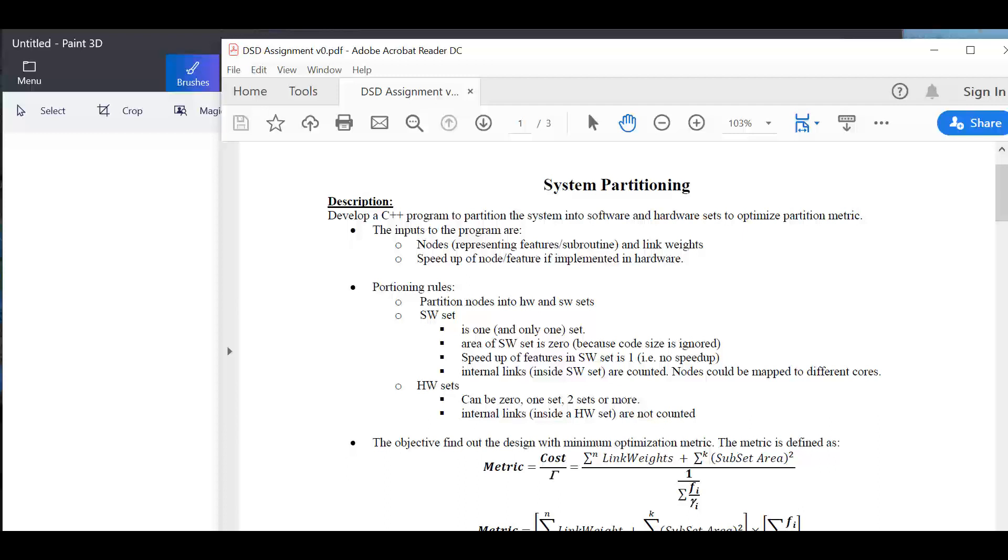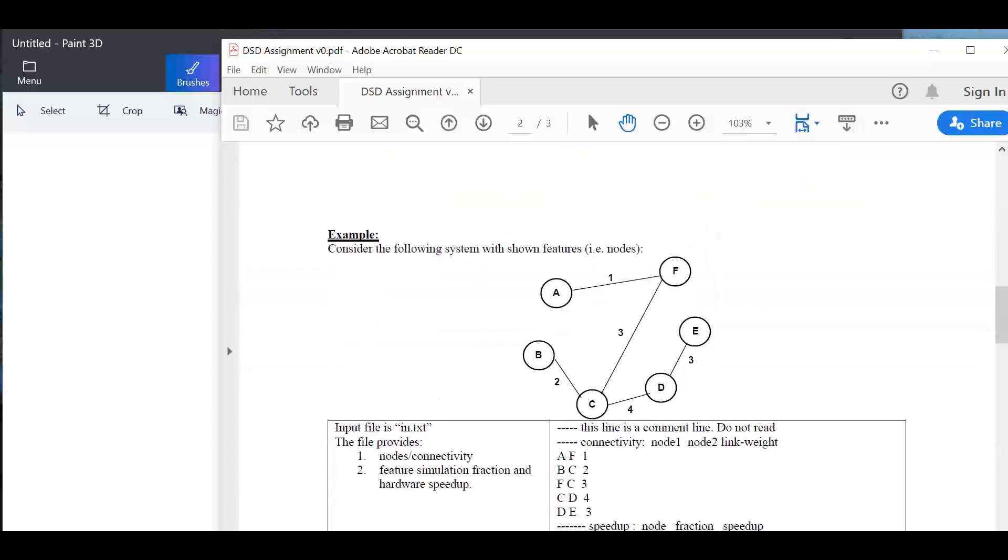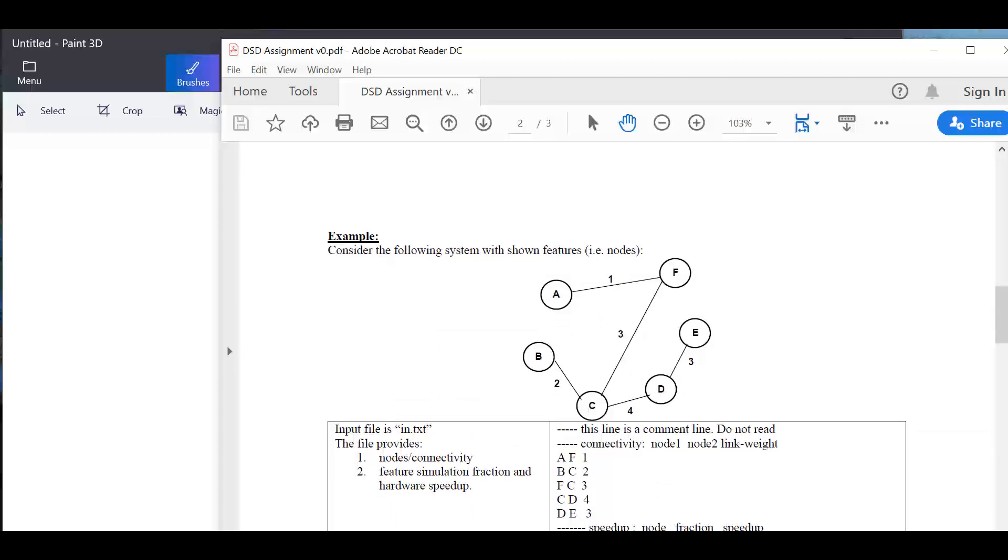To answer those questions regarding the assignment, the idea is we have a system of functions, for example the one you see in front of you, and these functions interconnect via communication links. Every communication link has a weight. For instance, between A and F there is a weight of one. This is a cost function, and in this case what we want to do is partition the system into two sets, one for software and one for hardware.